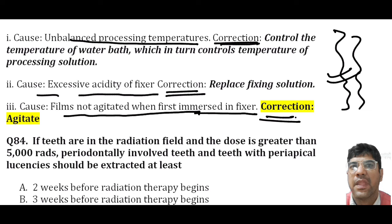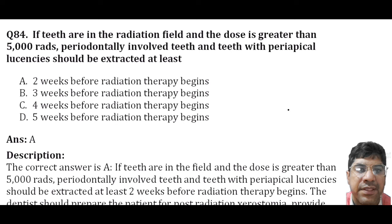If teeth are in the radiation field and the dose is greater than 5000 rads, periodontally involved teeth and teeth with periapical radiolucency should be extracted at least two weeks before radiation therapy begins. This is done to minimize the risk of complications and prepare the patient for potential side effects of radiation therapy including xerostomia and its associated dental care requirements.